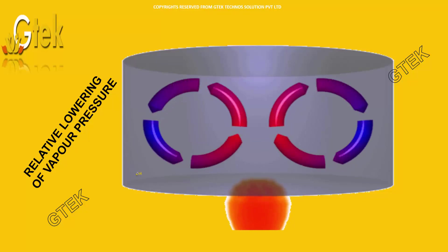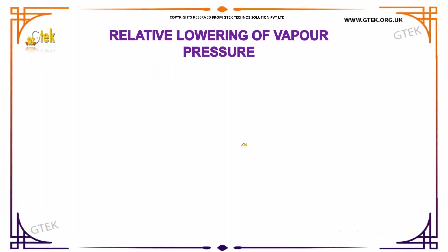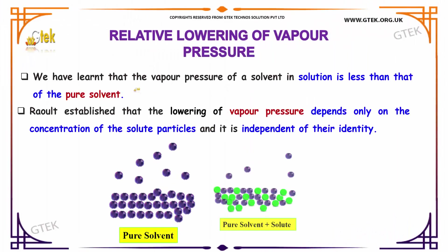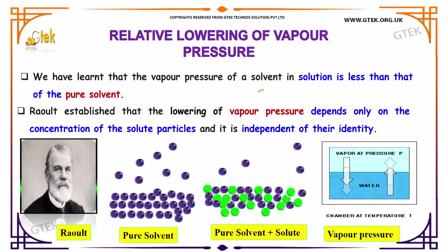The next topic we are looking into is the relative lowering of vapor pressure. We have learned that the vapor pressure of a solvent in solution is less than that of the pure solvent.